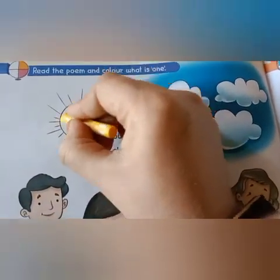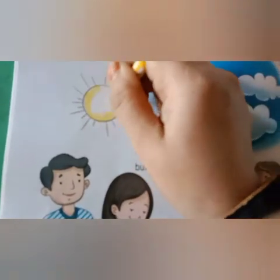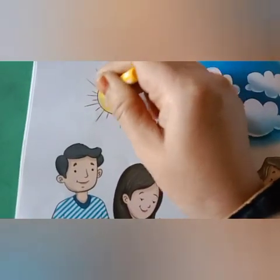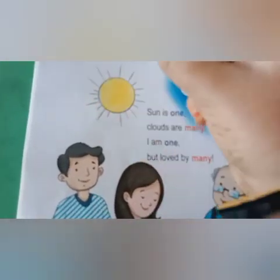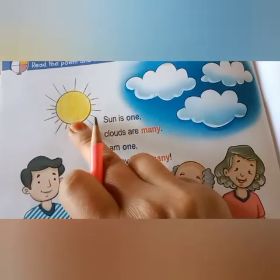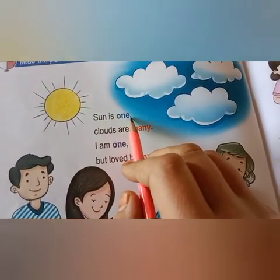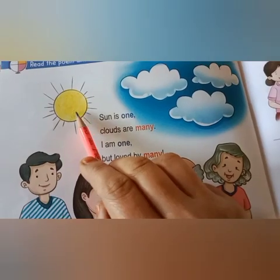Let us color it, come on. Color it with yellow color. Okay children, you have to use yellow color for coloring the sun. What is the color of the sun? The color of the sun is yellow. Take yellow color and do it on sun. Let us read it again: S-U-N, sun. I-S, is. O-N-E, one. Sun is one. So you have to color the sun.